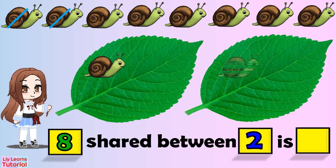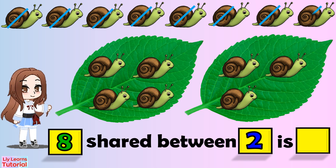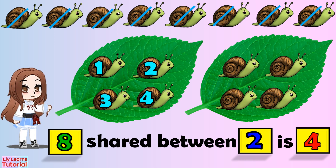One, two, three, four, five, six, seven, eight. I'll go ahead and count how many snails are there in each leaf. One, two, three, four. There are four snails in each leaf. We write four in the last box. Therefore, eight shared between two is four.